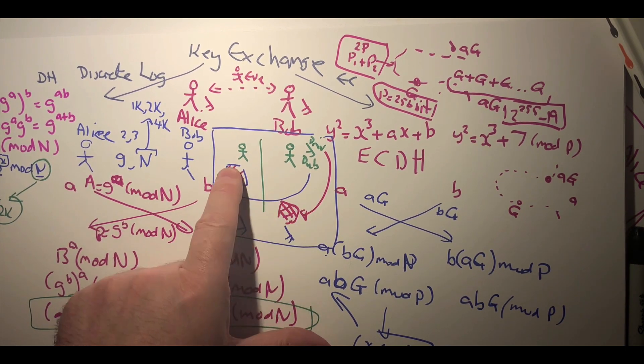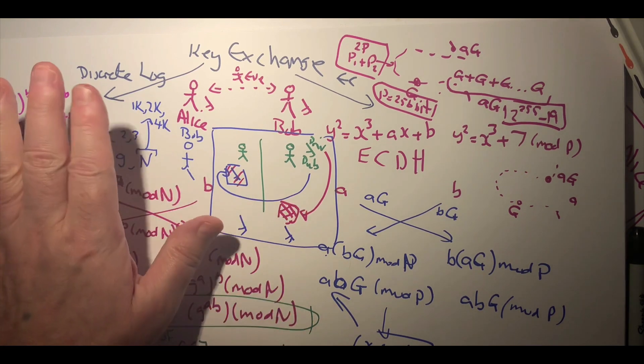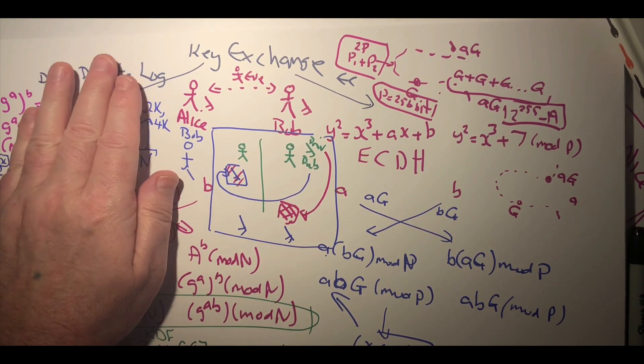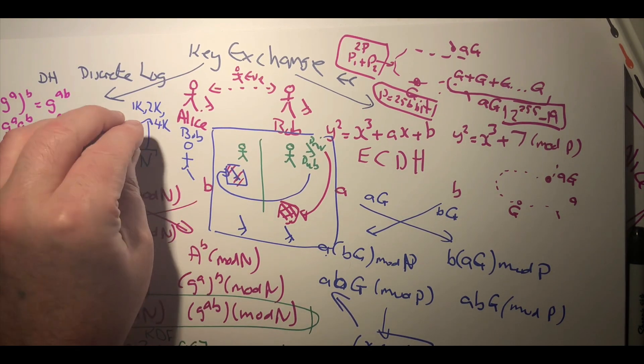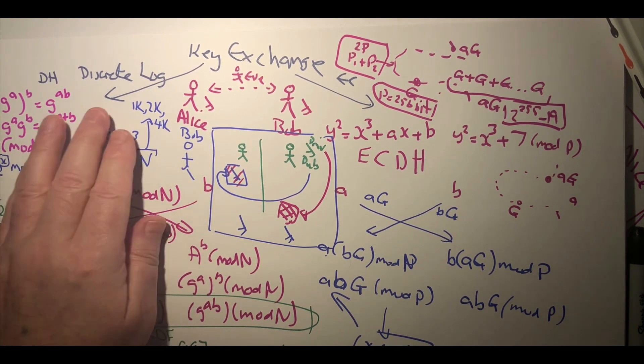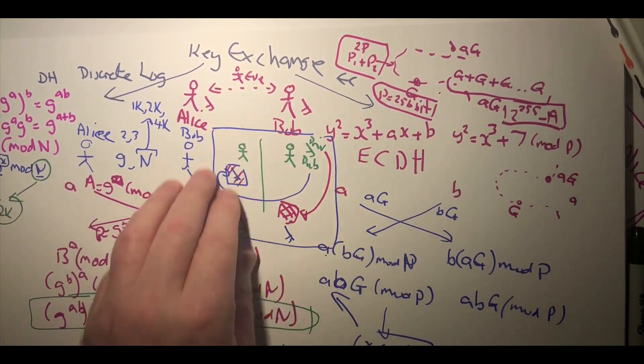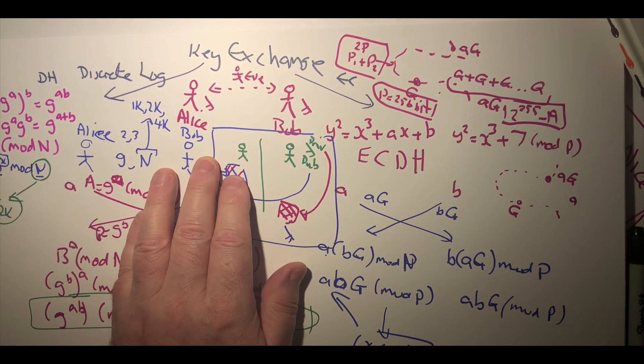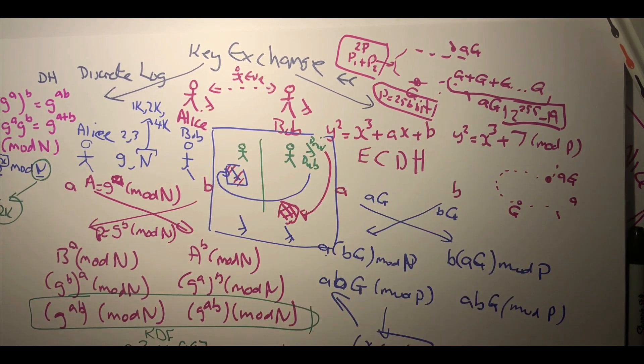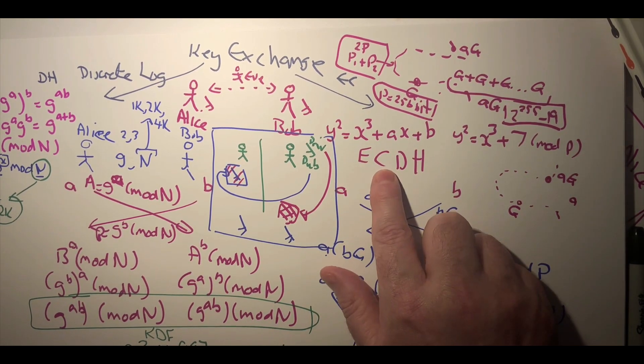Okay, so generally we started here with Diffie-Hellman, this was open to attack, we moved really towards this encrypted key exchange method using public key, but now we're generally working within elliptic curve Diffie-Hellman.